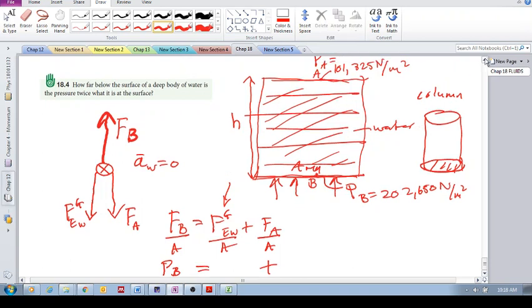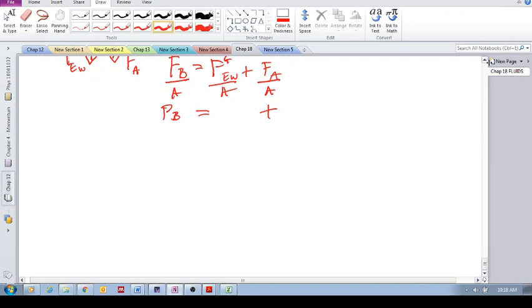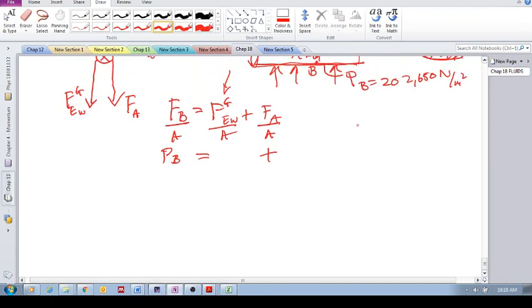And what is Fa over the area? Well we know that Fa over the area is simply that atmospheric pressure, which is simply Pa, which is that 101,325. But what is Fg here?